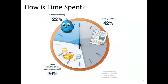So how much time do we spend on networks? According to this picture, we can see that mostly we spend our time viewing content, which equals 42 percent. Then for other activities such as emailing, commerce, and search, which comprises 36 percent, and lastly social networking, which equals 22 percent.